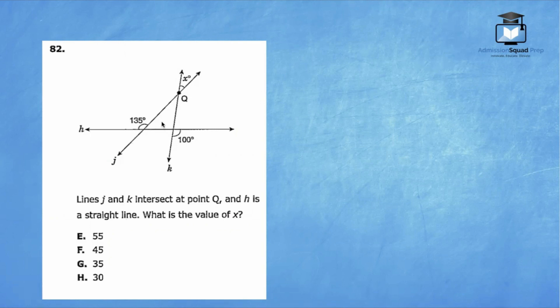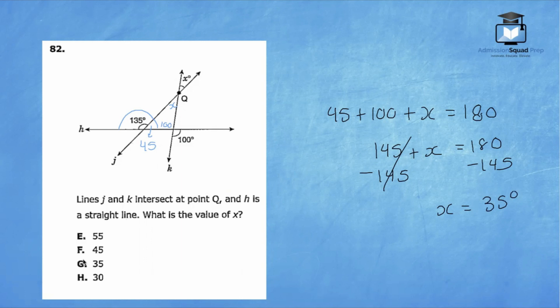The angle that measures 100 degrees is forming a vertical angle pair with this angle right here that's inside the triangle. We also know that if X is out here, this is also a vertical angle pair. Finally, we know that 135 is a linear pair with this interior angle. So 135 plus this missing angle has to give us 180, and that's going to be 45. So let's set up our equation. 45 plus 100 plus X will give us 180 degrees. So we have 145 plus X equals 180. If we subtract 145 on both sides of the equation, we have X equals 35 degrees. So G is the correct answer.